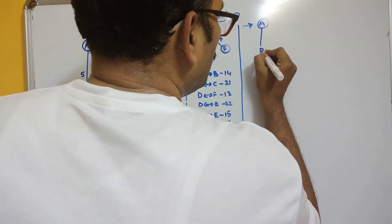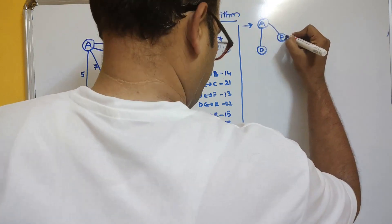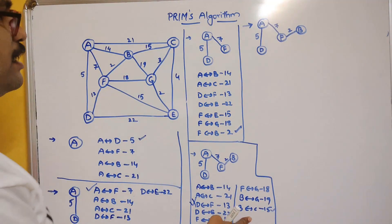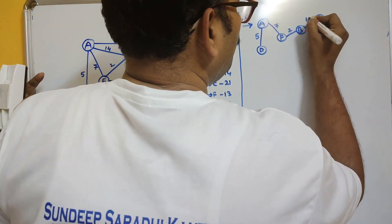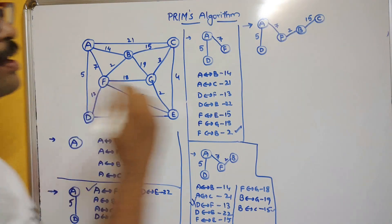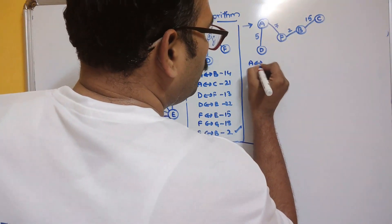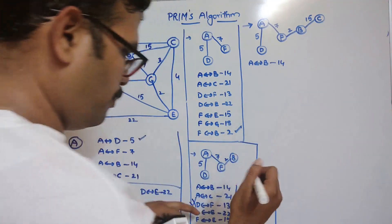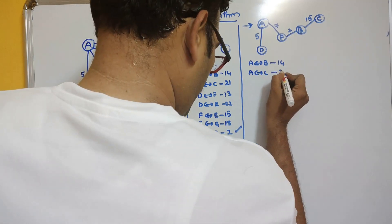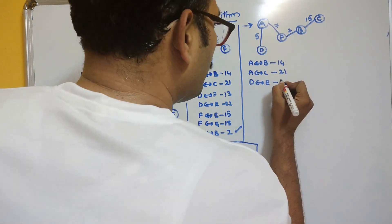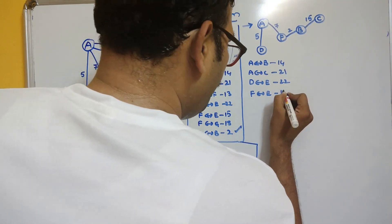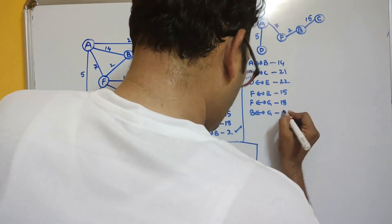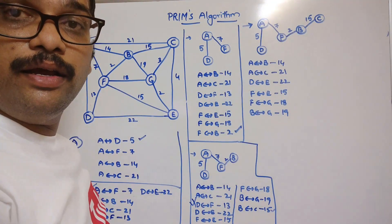We include B to C with cost 15. The tree is now A–D, A–F, F–B, B–C with costs 5, 7, 2, and 15. The remaining edges are: A to B with 14, A to C with 21, D to E with 22, F to E with 15, F to G with 18, B to G with 19.